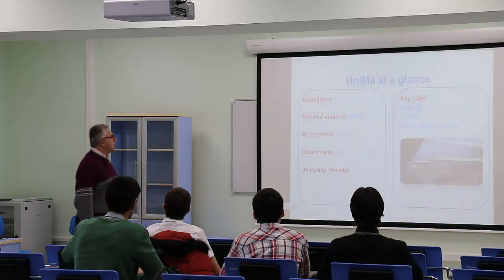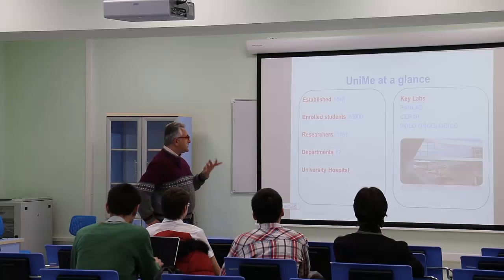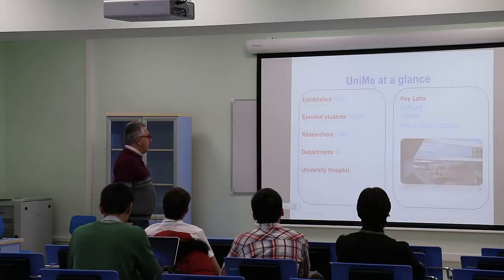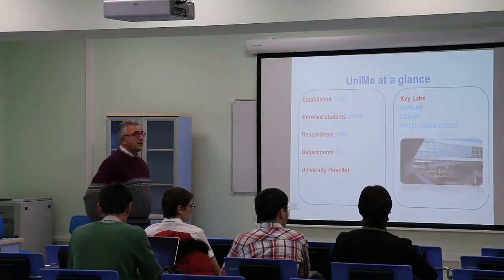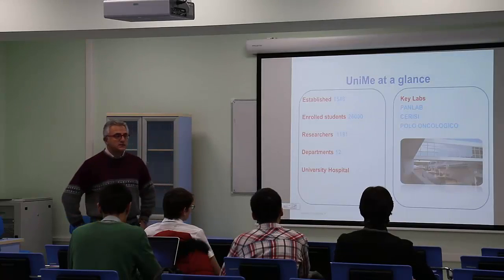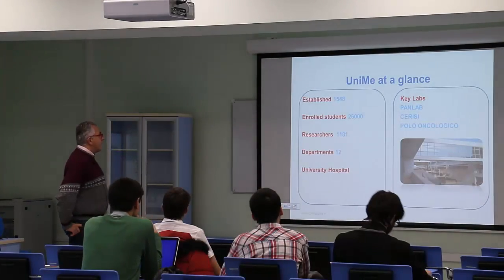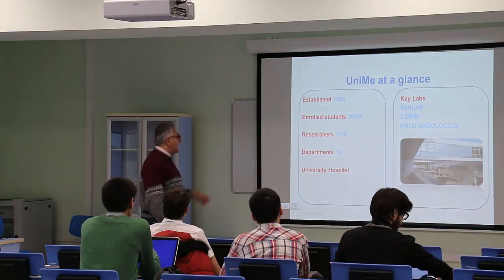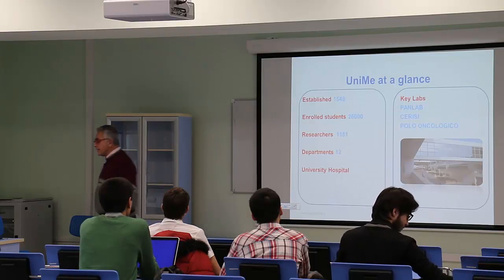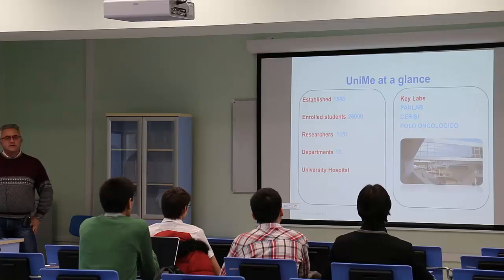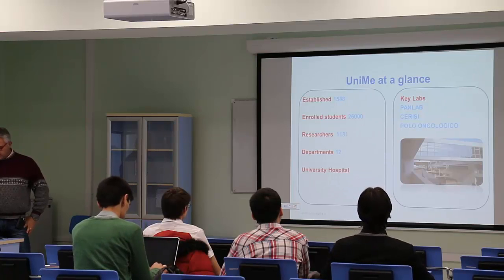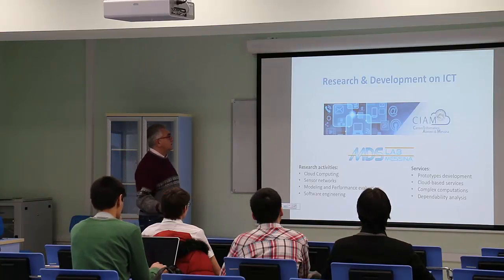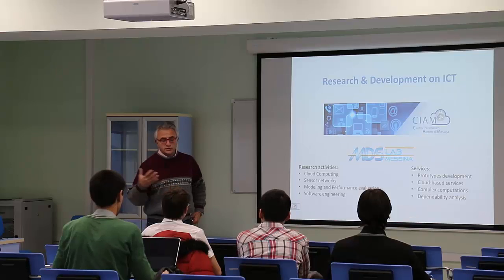Very quickly, the University of Messina is one of about 70 universities in Italy. We have around 25,000 to 26,000 students at the moment. It is organized in different blocks — this is the engineering faculty where we are. There are at the moment 11 departments available in the university. Regarding information technology and computer science, we have two groups.